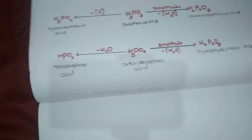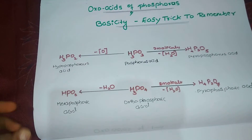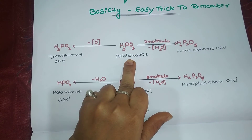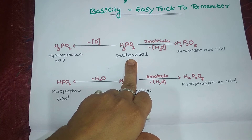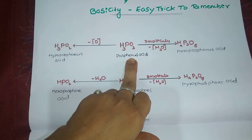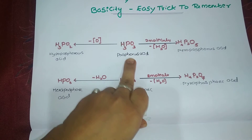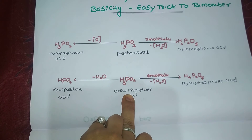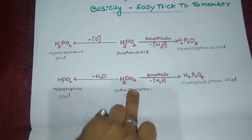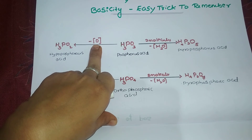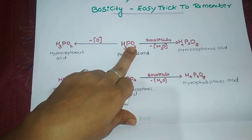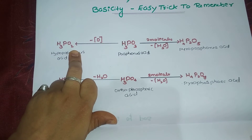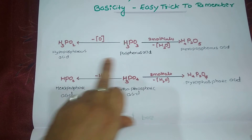Now let us discuss how these oxo acids are prepared. As explained in the previous video, these acids are obtained by the loss or gain of a water molecule or an oxygen atom. Take H₃PO₃ (phosphorous acid): if one oxygen atom is removed, the formula becomes H₃PO₂ - that is hypophosphorous acid. The prefix hypo is used because there is a decrease in the oxidation state of phosphorus.